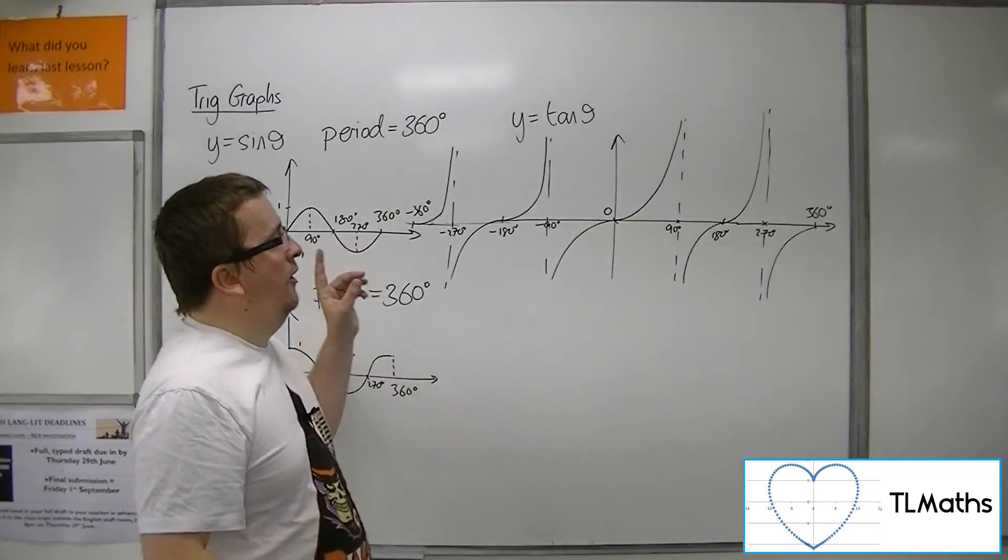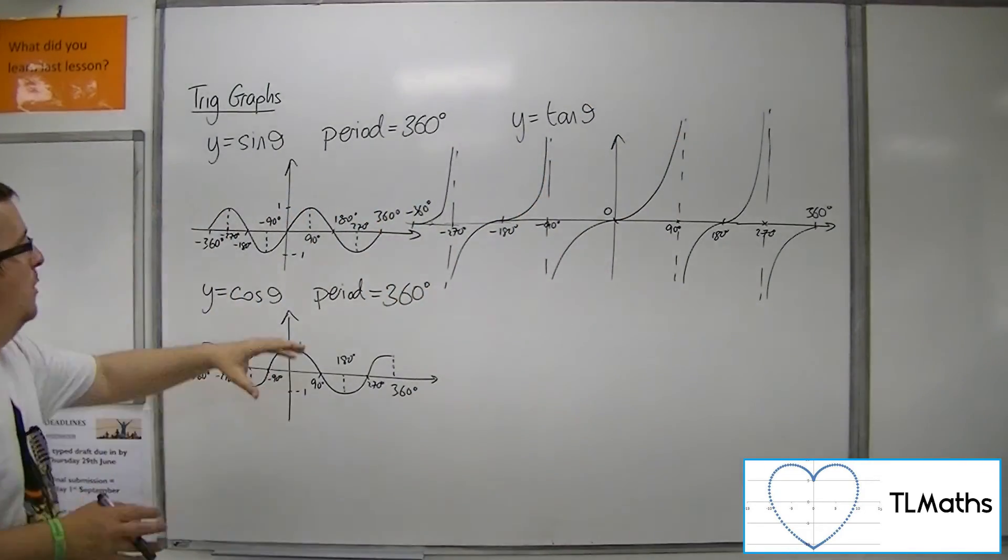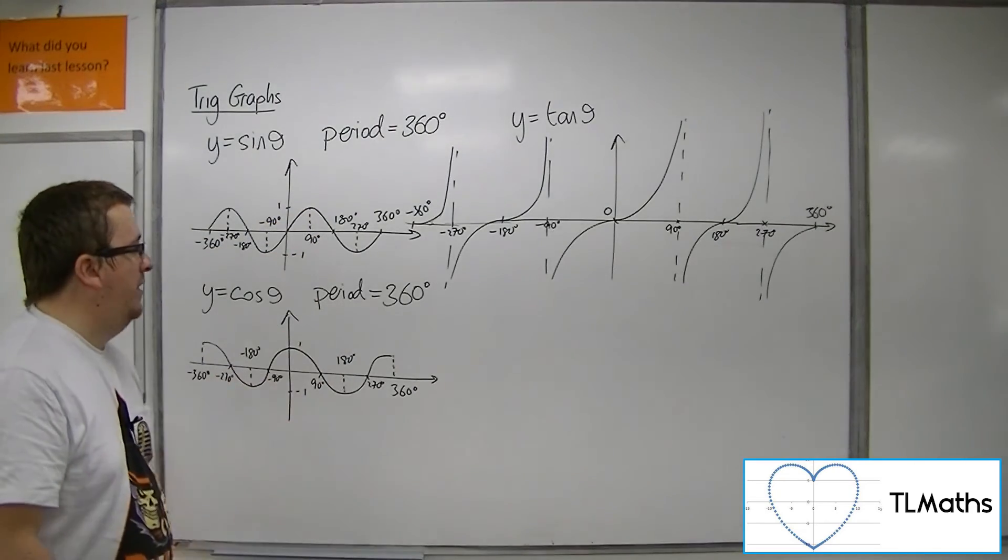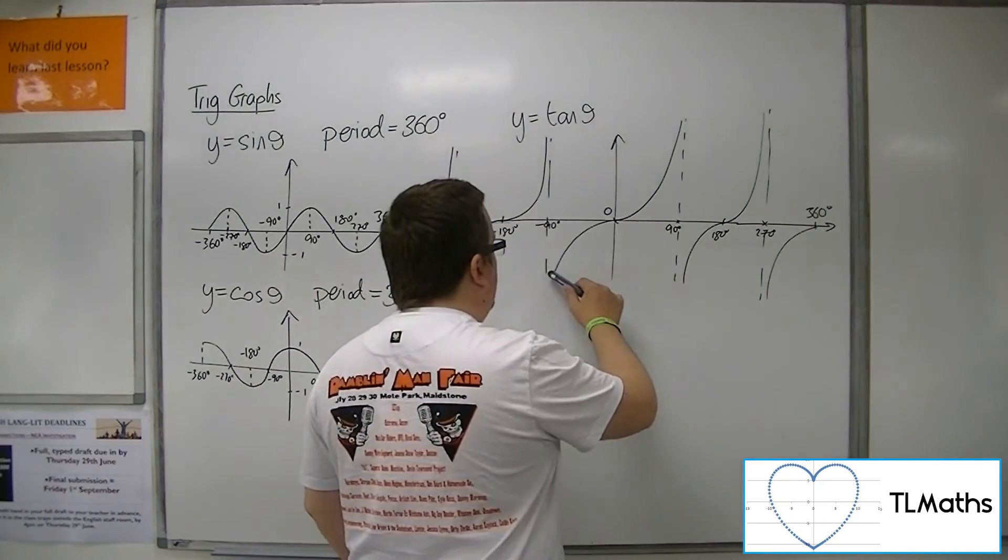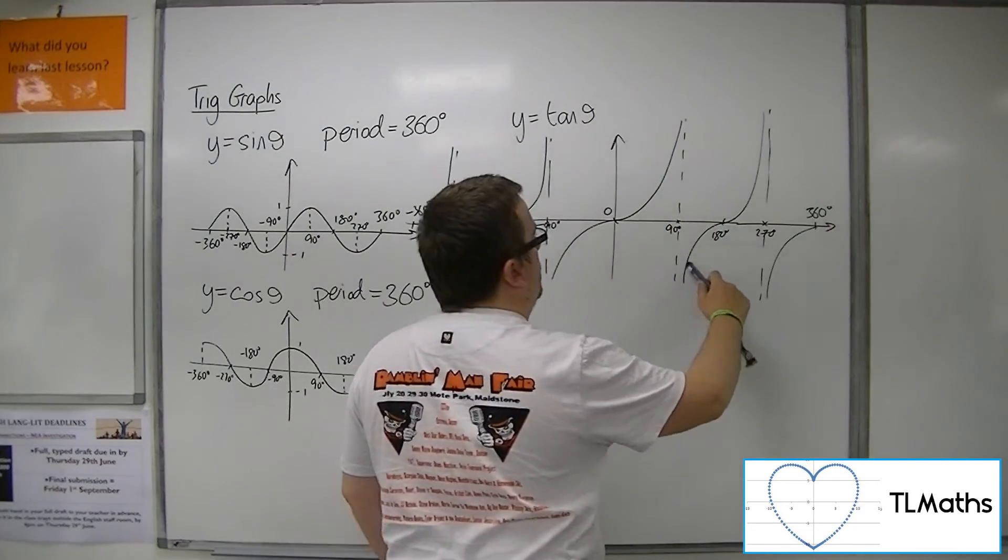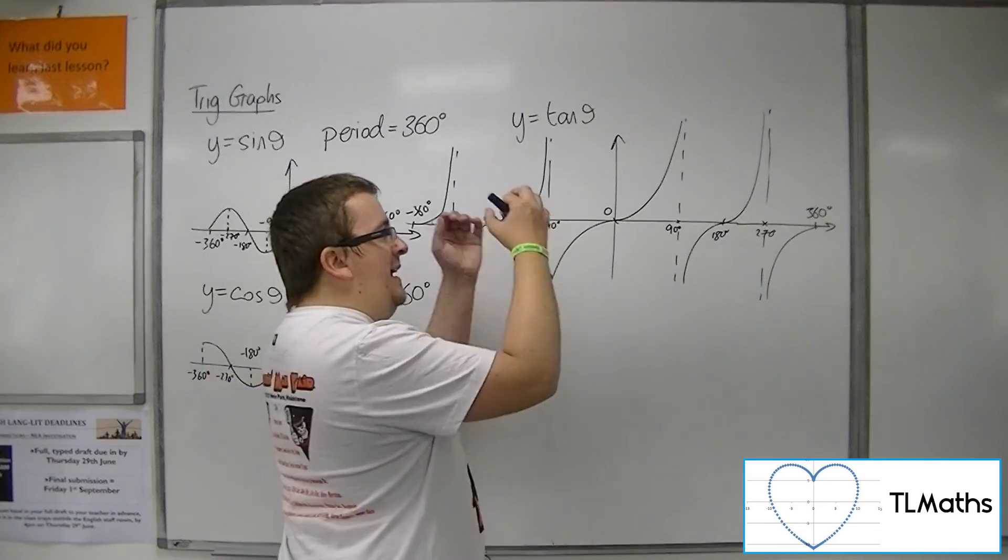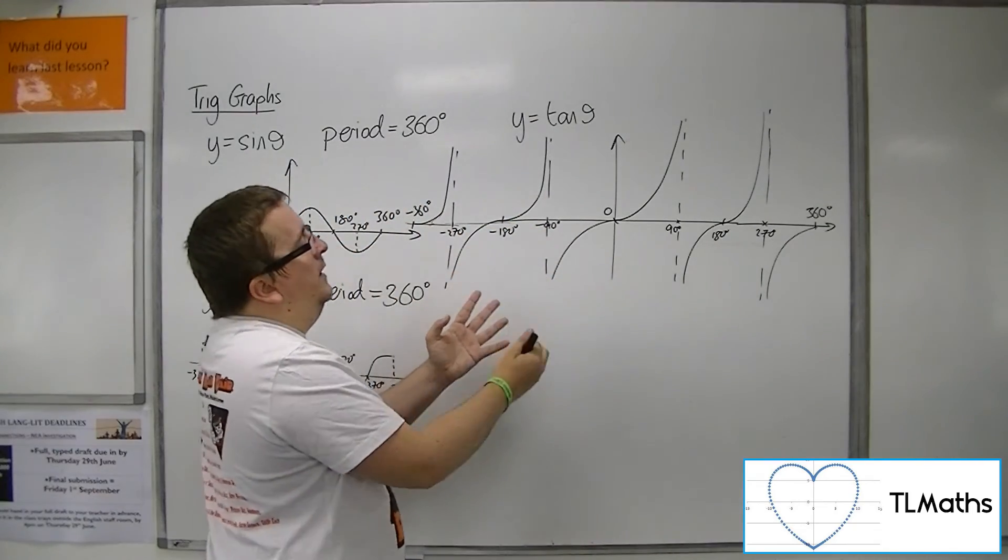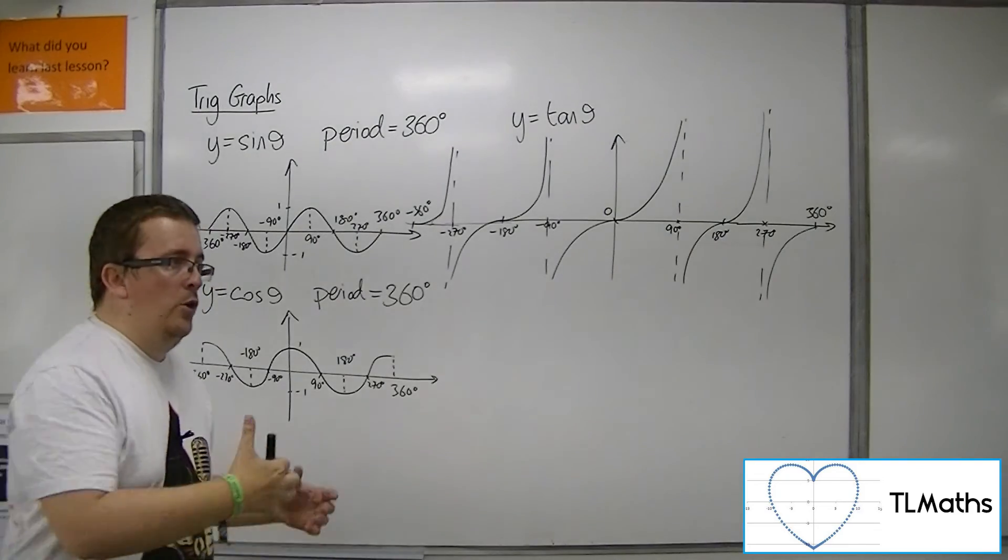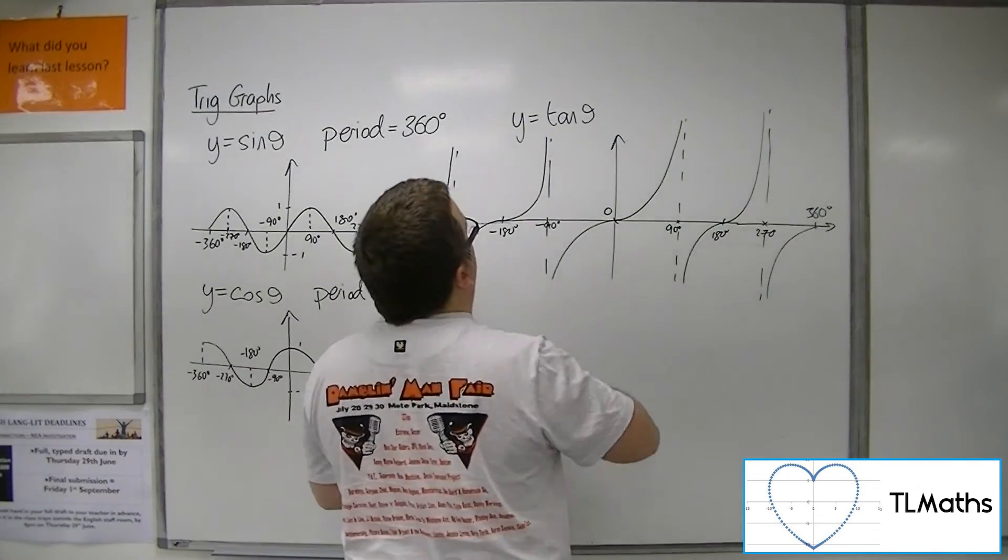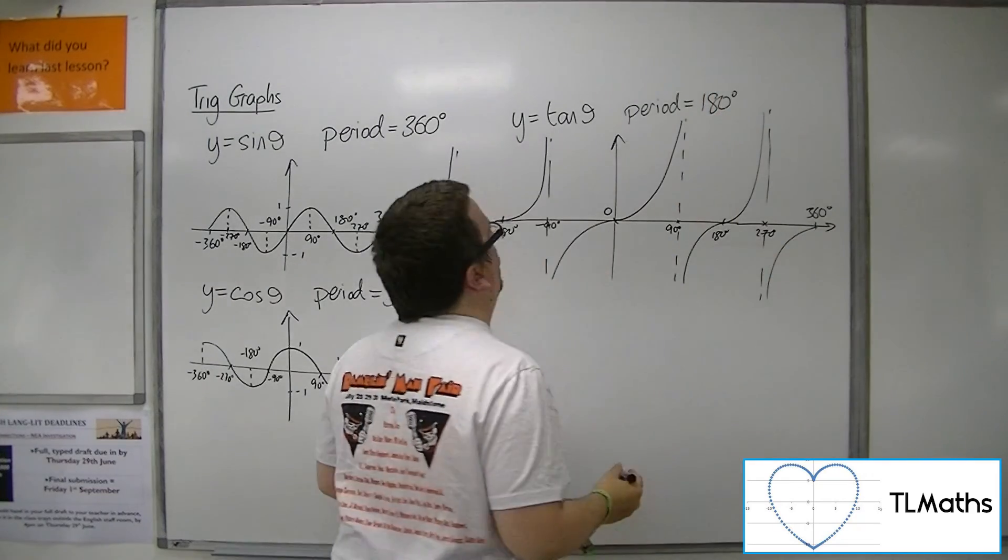The curve shoots off to positive infinity or down to negative infinity, so it's not bounded like sine and cosine are by 1 and minus 1. For the tan curve, it's this piece here that repeats itself, going from minus 90 up to 90. That's 180 degrees repeating itself, so the period for tan is 180 degrees.